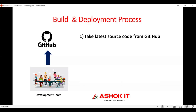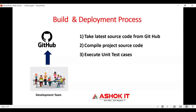The build and deployment process works as follows: we take the latest source code from GitHub, where developers have stored their code. We download the .java source files from GitHub and compile them, generating bytecode. Once the bytecode is generated, we execute unit test cases — specifically the JUnit tests implemented in the project.